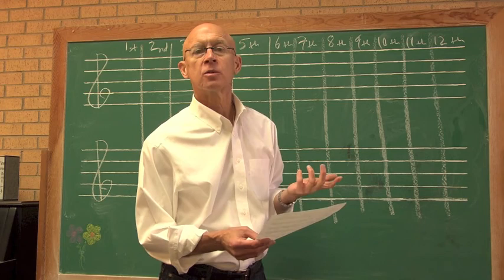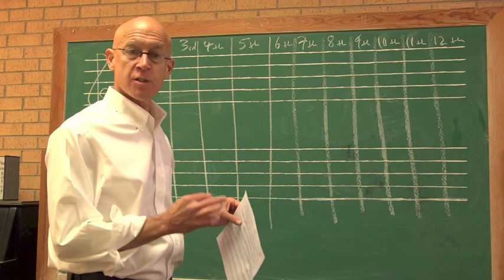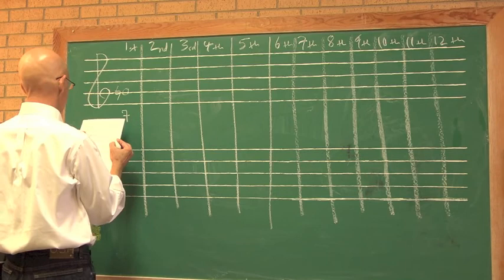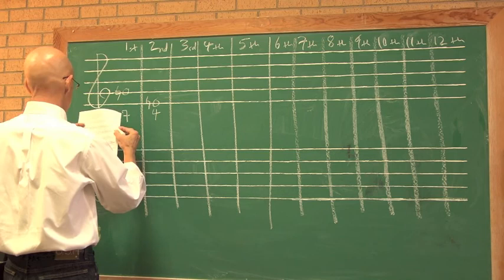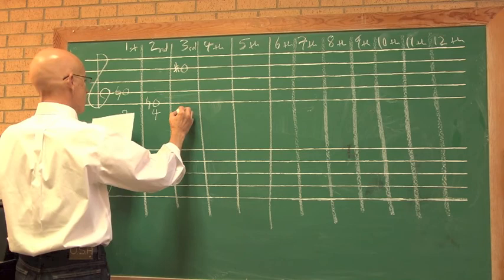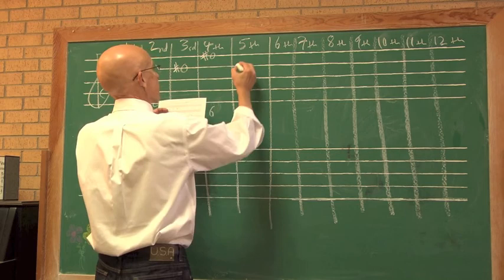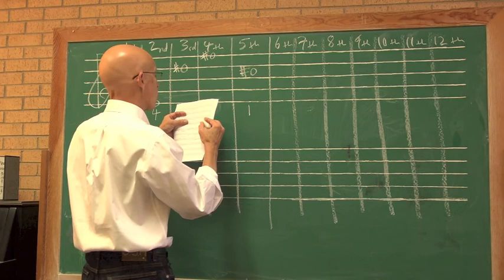Let's take the 12-tone row upon which Webern's Wie Bin Ich Froh, or How Happy I Am, is based. They're the first 12 notes of the vocal part. The first note is G, or Pitch Class 7. The second note is E Natural, or Pitch Class 4. The third note is D Sharp, or Pitch Class 3. The fourth note is F Sharp, or Pitch Class 6. The fifth note is C Sharp, or Pitch Class 1.